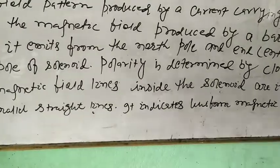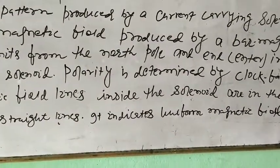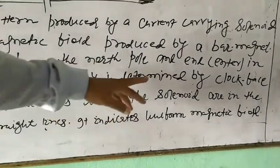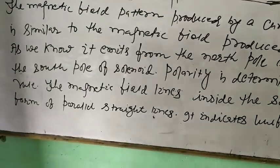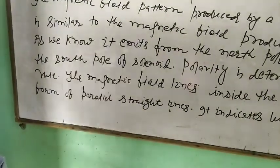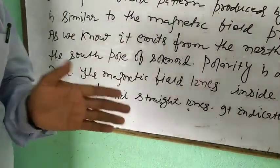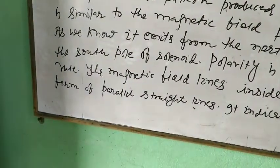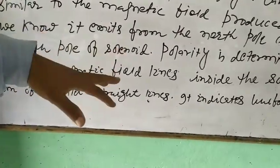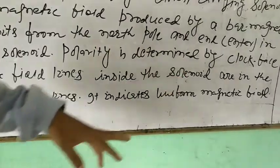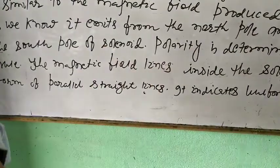The polarity of the solenoid — that means the north pole and south pole — is determined by the clock face rule, which we have already discussed in the previous class. The magnetic field lines inside the solenoid are in the form of parallel straight lines.